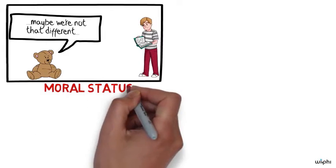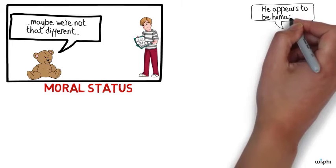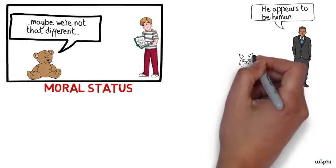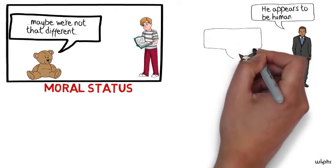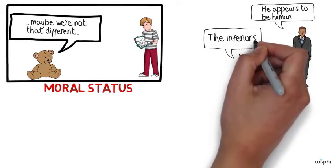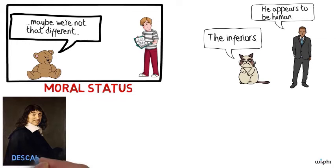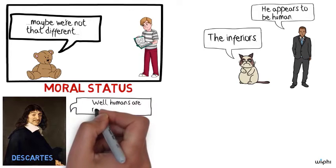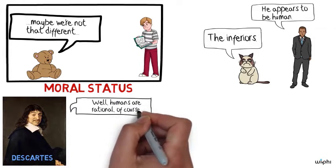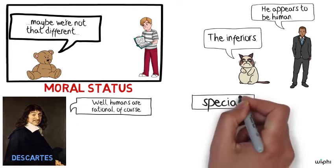Now, historically, most philosophers have thought that the difference between me and my teddy bear is that I'm a human being and my teddy bear is not. In other words, most philosophers have thought that all and only human beings have moral status. But why? What makes us so special? Well, many people like René Descartes answer this question by saying that we have rationality or language or self-awareness or some other very sophisticated cognitive capacity. This is what makes us special and this is what gives us moral status.